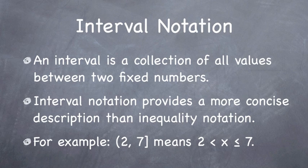For example, what we have written here, we read as open bracket 2, 7 closed bracket. All that means is we're taking all the values between 2 and 7, where we include 7 but do not include 2. When we use a curved or open bracket, that means we take every value up to that number but not including it. A closed or square bracket means we include that number as well.